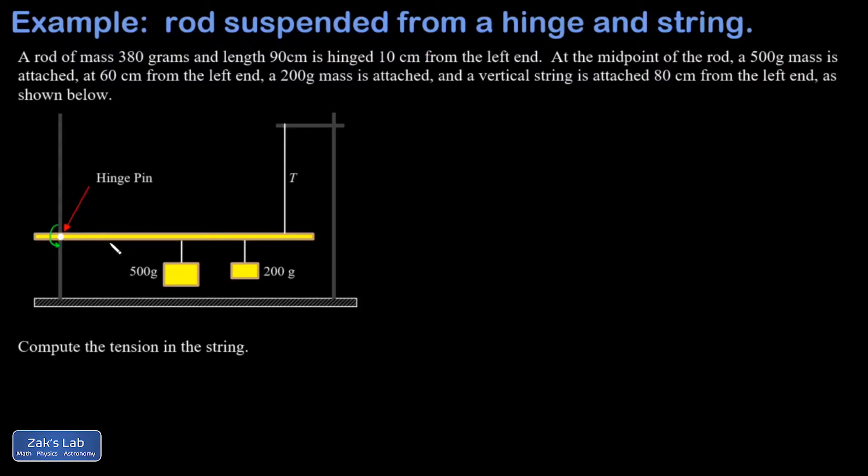So the midpoint of this rod is going to be at the 45 centimeter mark which would be 35 centimeters from that hinge pin and there are actually two things going on there. So there's a 500 gram mass suspended there and that's half a kilogram and the force of gravity down on that is going to be mg which is 0.5 times 9.8 or 4.9 newtons. But you don't want to forget that the rod itself has mass.